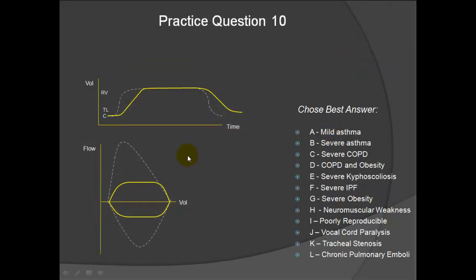Question 10: No numbers are given, just the curves. On the spirogram there seems to be constant flow in the middle of both expiration and inspiration. On the flow volume curve, there is a cutoff of flow on both inspiration and exhalation. We see a fixed upper airway obstruction, and the best answer is K, tracheal stenosis.